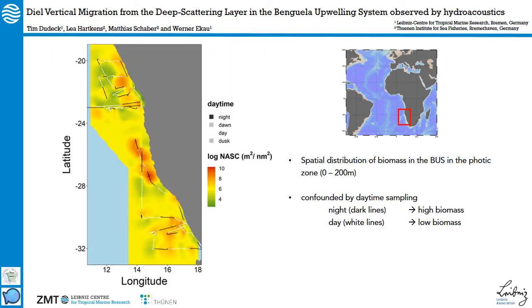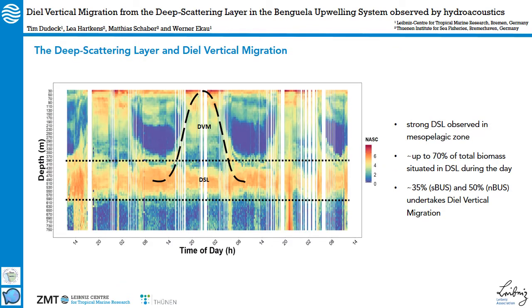When we look at the biomass in the first 200 meters of the water column as determined by hydroacoustics, we see that the biomass distribution is quite patchy and higher on the shelf area. But we also notice that the biomass is higher when sampling took place during the night, depicted here as darker black lines, and lower during daylight acoustic transects. This is a pattern we see throughout in the south and in the north, so there's quite an influence of daytime sampling on biomass analysis.